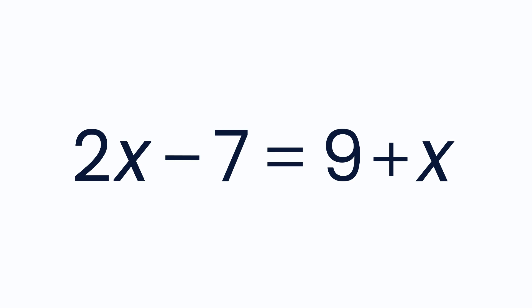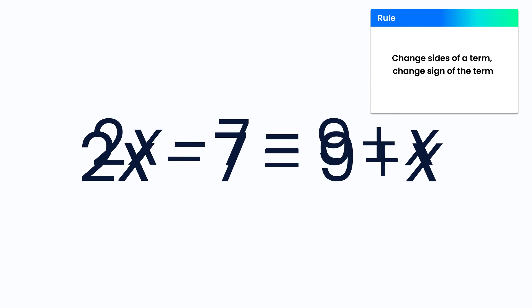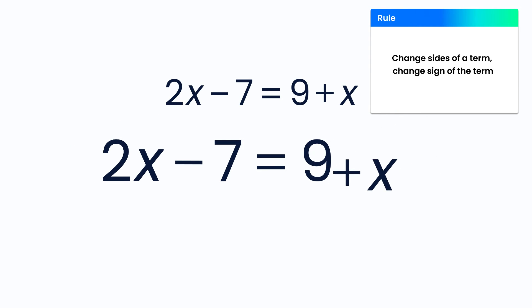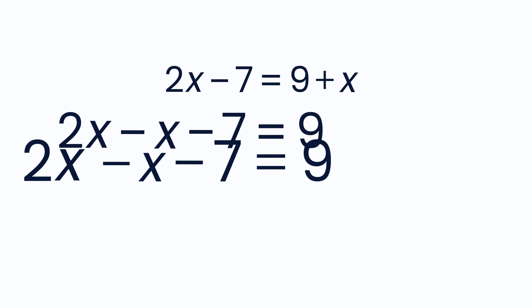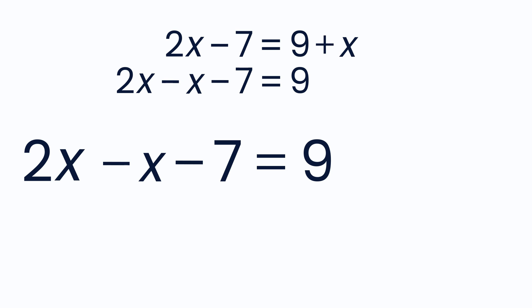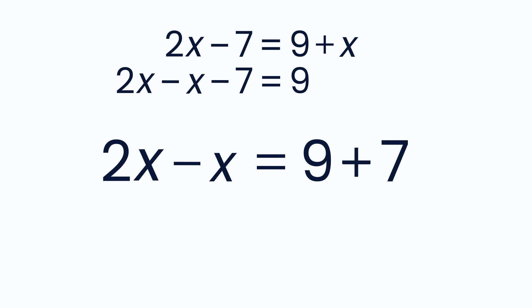By using the Change Sides Change Sign Rule, x gets moved to the other side and its sign changes. Now you have 2x minus x minus 7 equals 9. Next, you move minus 7 to the right and change its sign, giving you 2x minus x equals 9 plus 7.